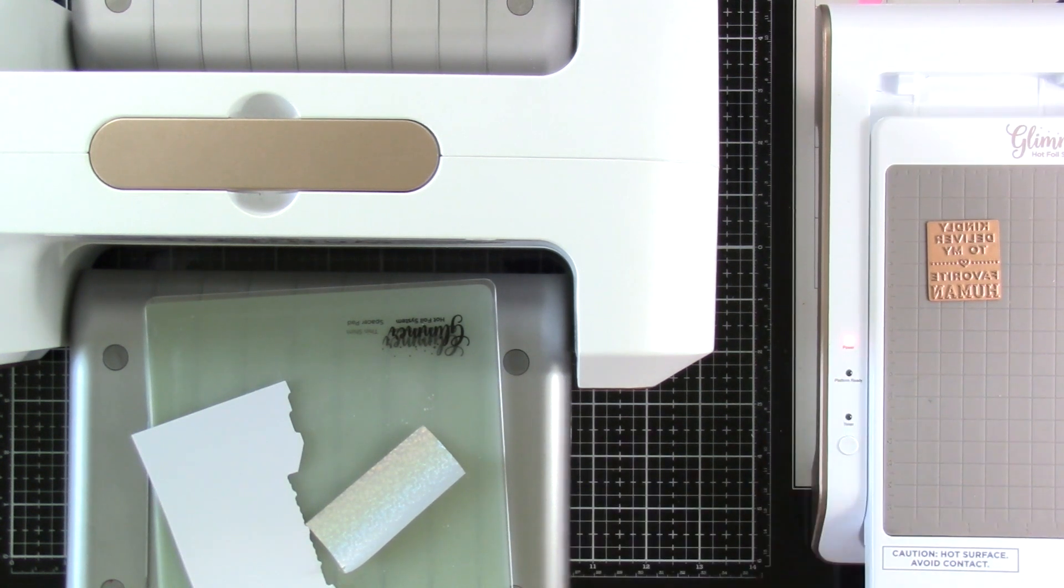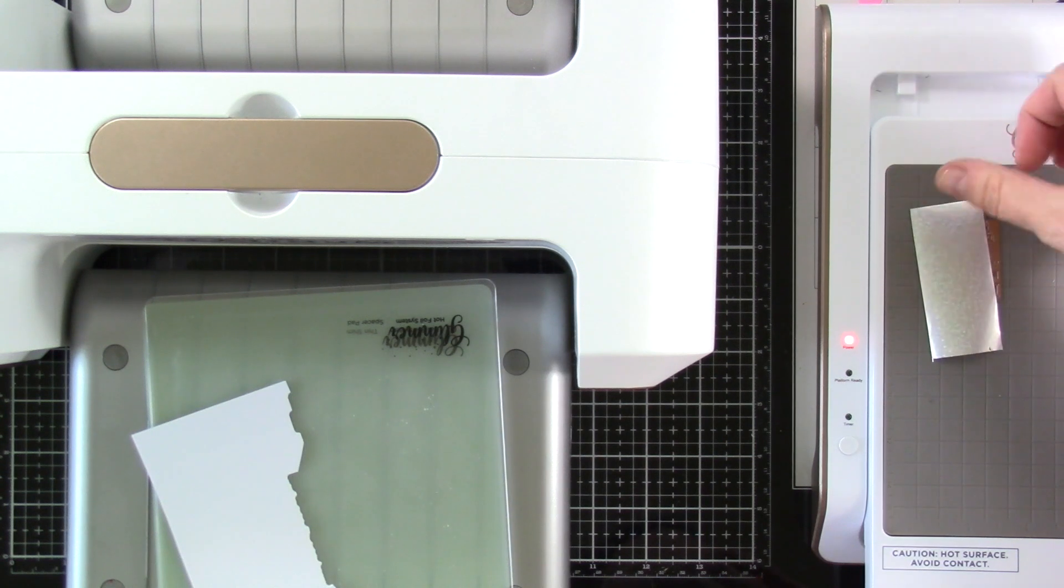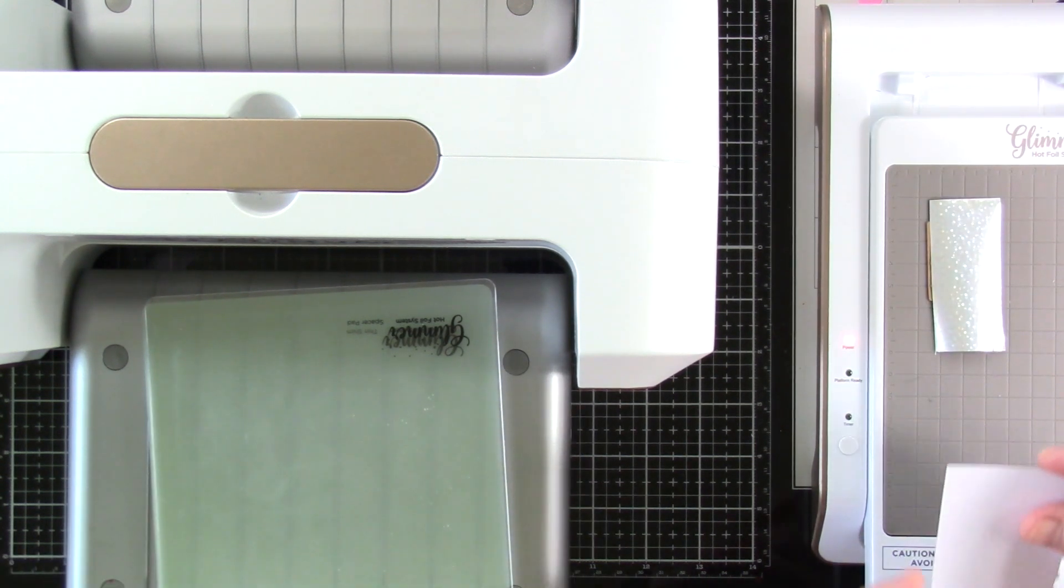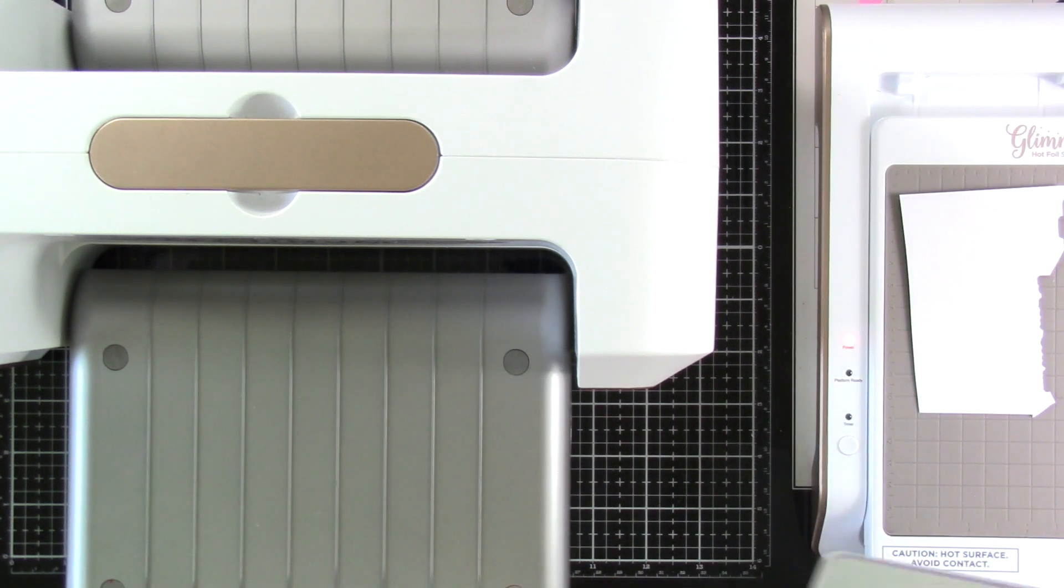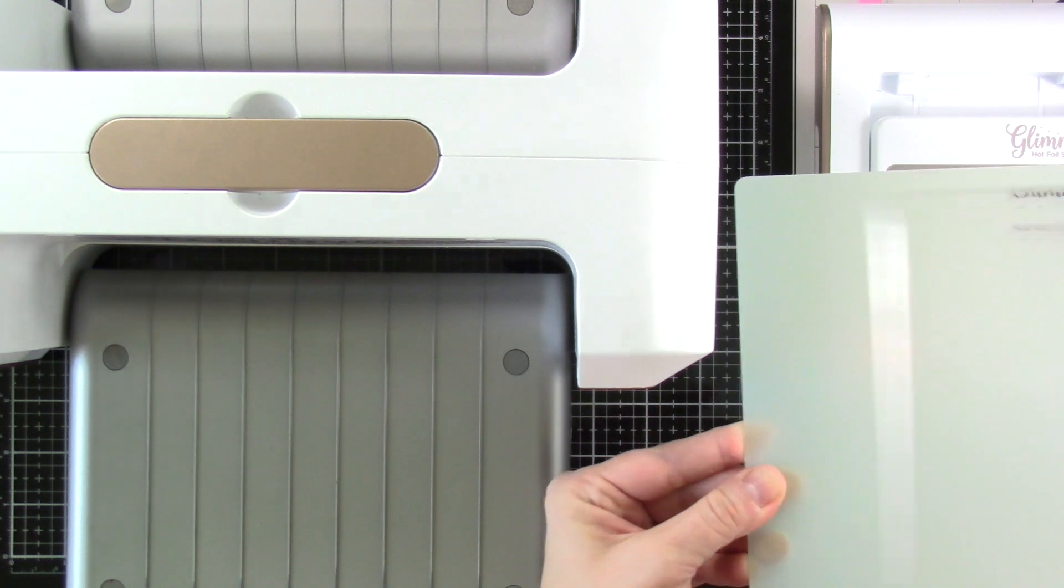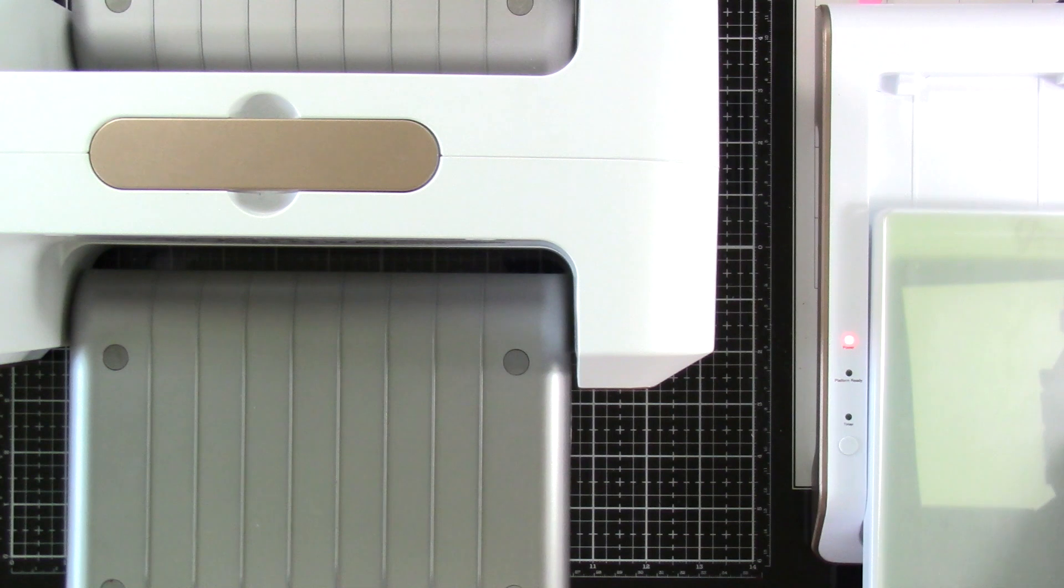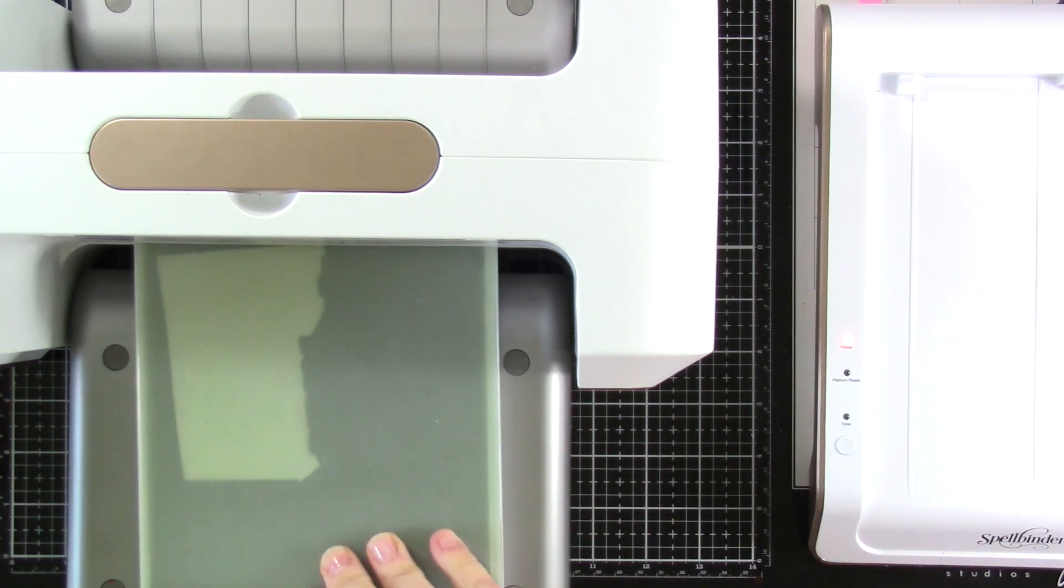But what I like to do is I pull my plate out, set my foil on top, and then I'll set my paper on top, just trying to make sure that I don't move anything over the top of it, just kind of placing it on there. And then I set my two plates, my mint green one and my clear ones, just straight down on top. Hold everything in place so that nothing shifts.